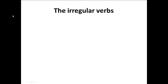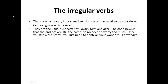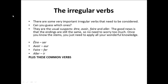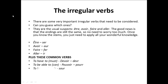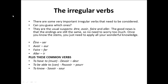Now in French we're always going to come across irregular verbs, and there are some very important ones to consider — the usual suspects: être, avoir, faire, and aller. The good news is that the endings are still the same. Once you know the stems, you just apply your knowledge to those stems. Être: stem is S-E-R. Avoir: stem is A-U-R. Faire: stem is F-E-R. Aller: stem is I-R. Plus other common verbs: devoir — D-E-V-R, pouvoir — P-O-U-R-R, savoir — S-A-U-R. Write down these irregular stems before you carry on, as they will help you with the last activity.